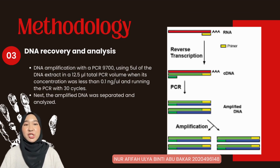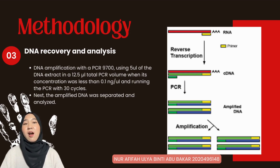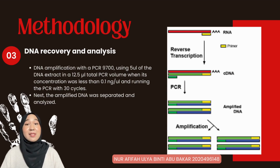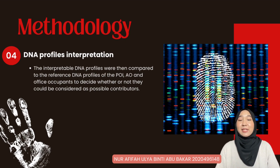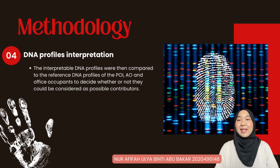DNA amplification was performed using a PCR 9700, using 5 µL of DNA extract in a 12.5 µL total PCR volume when the concentration was less than 0.9 ng/µL, running 30 cycles. The amplified DNA was then separated and analyzed. The interpretable DNA profiles were compared to the reference DNA profiles of the person of interest, alternative offender, and office occupants to determine whether they could be considered possible contributors.